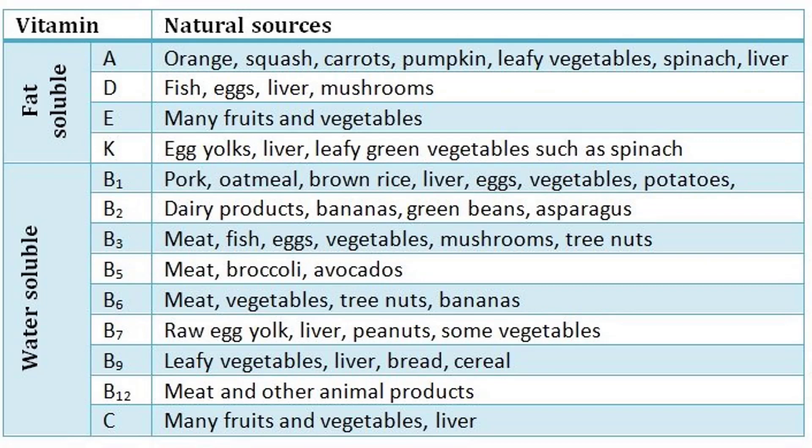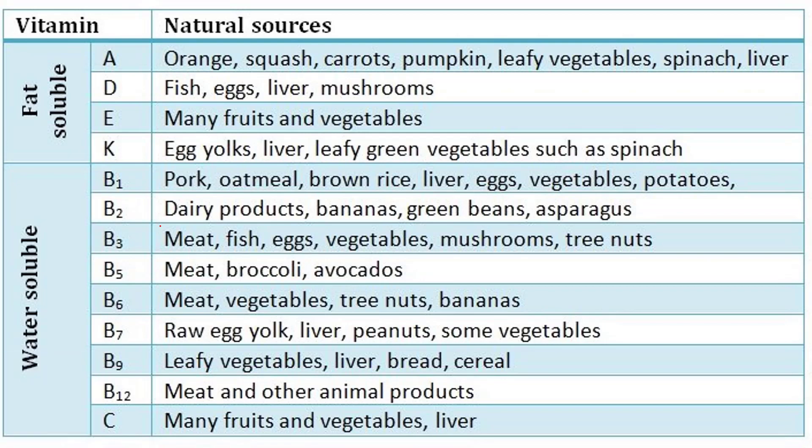Vitamin B1 sources: pork, oatmeal, brown rice, liver, eggs, vegetables, and potatoes. Vitamin B2 sources: dairy products, bananas, green beans, and asparagus. Vitamin B3 sources: meat, fish, eggs, vegetables, mushrooms, and tree nuts. Vitamin B5 sources: meat, broccoli, and avocados — B3 and B5 are somewhat similar. B6 is also similar; meat is common in B3, B5, and B6, and vegetables are common in B3 and B6.